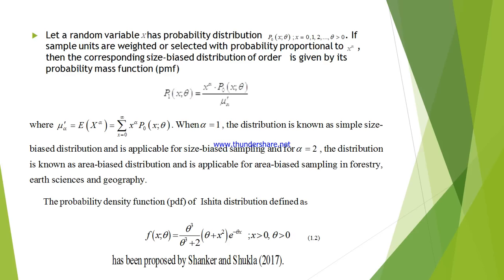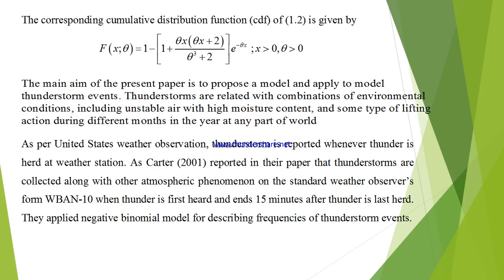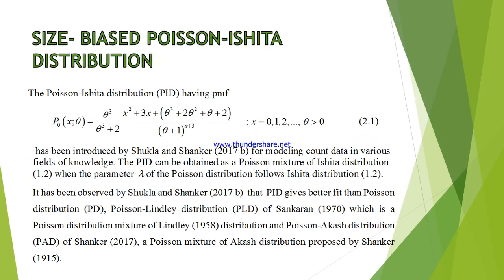This is the PDF of the STAR distribution, which we already proposed — Sankar and Shukla in 2017 — and it has been published. The cumulative distribution function is also given and mentioned in this slide. The size-biased Poisson-STAR distribution is mentioned in these slides; you can locate the distribution.